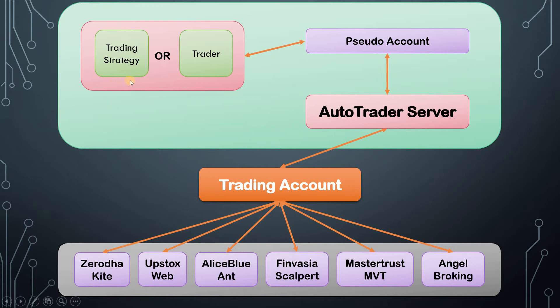Here we have a user — it could be his trading strategy or he could be trading manually. Now all operations that happen in AutoTrader Web happen on a pseudo account. So the user or his trading strategy is only aware of the pseudo account, not aware of the actual trading account in which the orders go. For example, if a request is sent to place an order, the request information will have the pseudo account mentioned in it, and that request comes to the AutoTrader server.